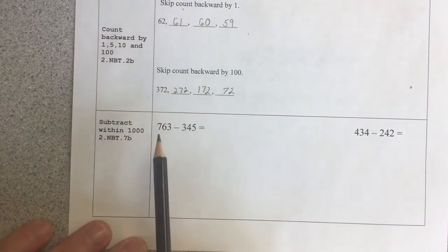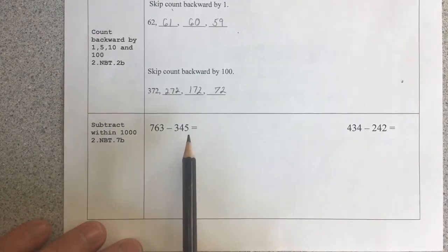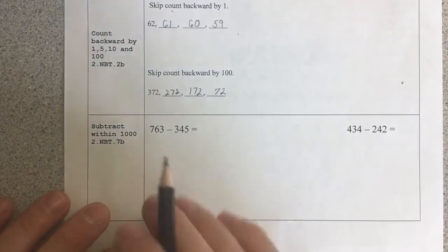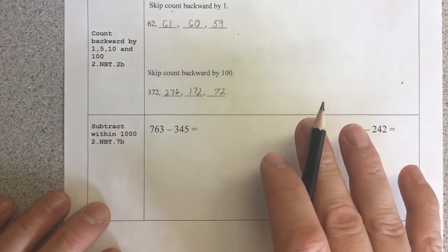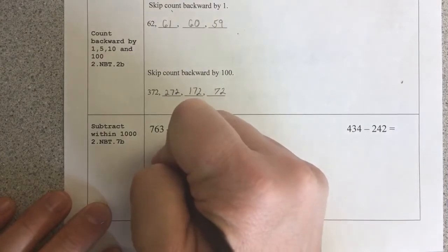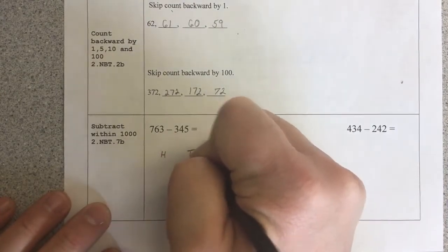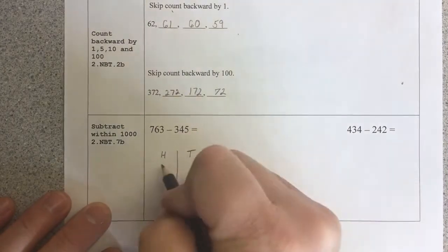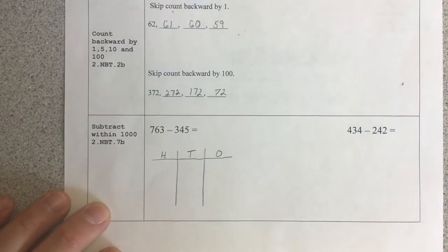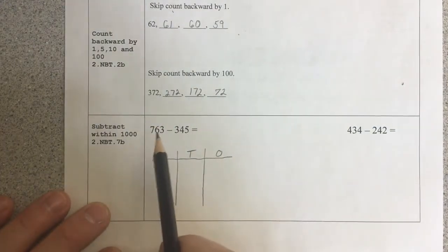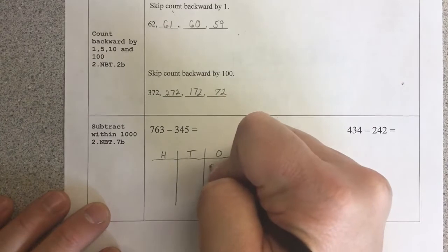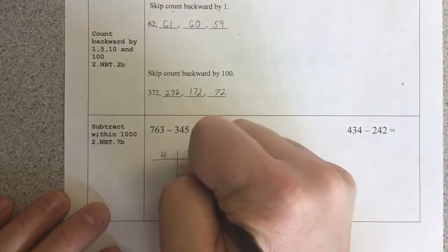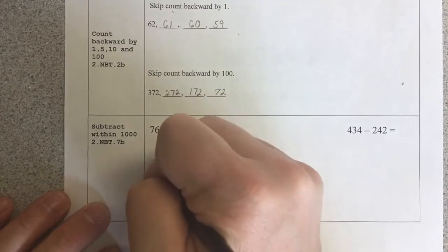Subtract within 1000, 763 minus 345. Now I'm going to use the place value chart to solve this. Remember, your method may look different than mine. That's fine. So 763. So I have 100s, 10s, and 1s. Now to use the place value chart to solve this, the first thing I do is build the number 763. So I have 3 ones, 6 tens, and 7 hundreds.